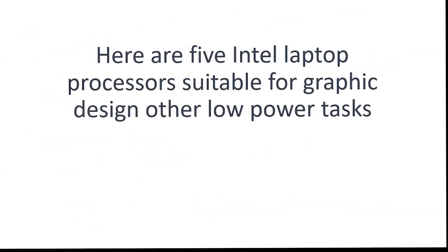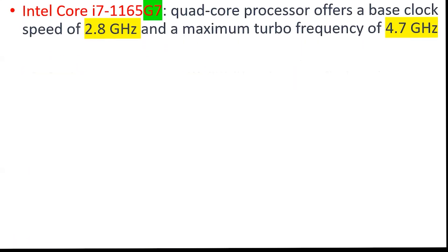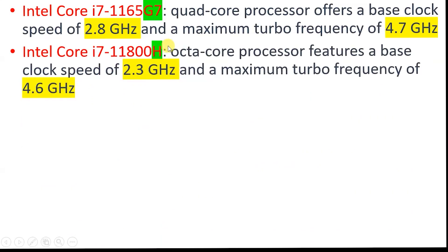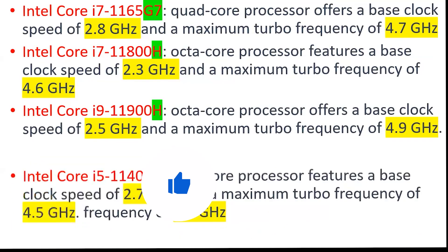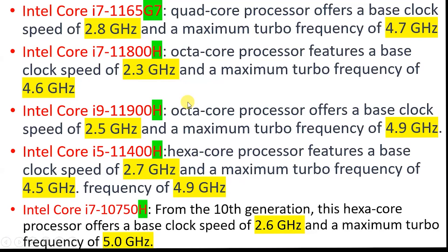Here are five Intel laptop processors suitable for graphic design. If you are a graphic designer, this is the one you should buy. We have Intel i7 quad-core with speed of 4.7 GHz. We also have 'H' suffix octa-core processors — these are very powerful. They can run almost all graphic design software. Notice the highlighted letters: 'H' for graphic design, compared to 'G' and 'U' for office and browsing.